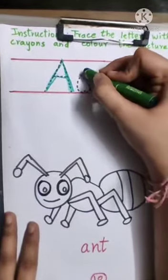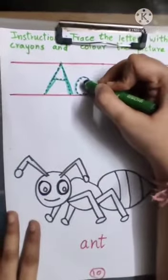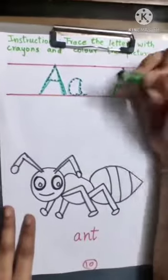Then we have small A. Make a C pattern, a slightly curvy line.